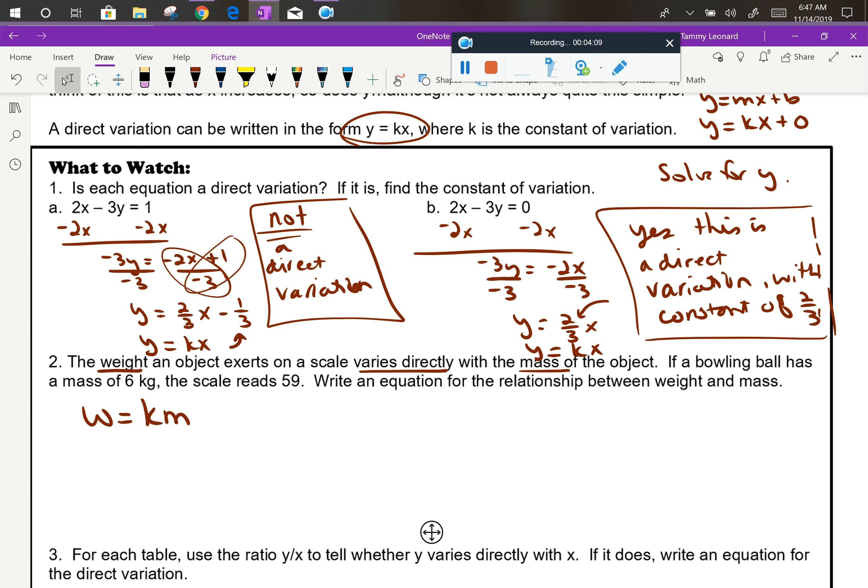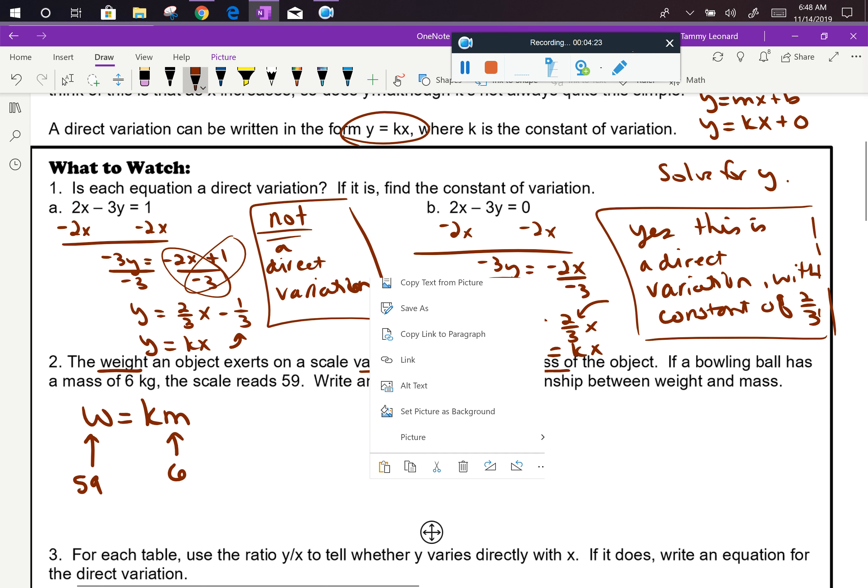If a bowling ball has a mass of 6 kilograms, so notice they're telling us a mass, the scale reads 59. So notice now they're telling us a weight.